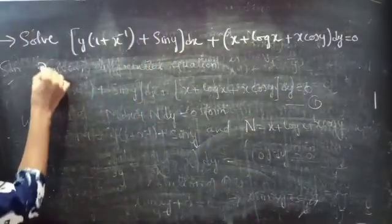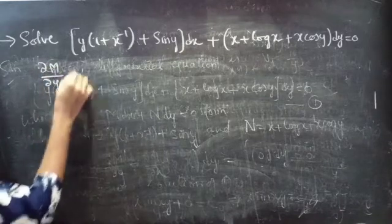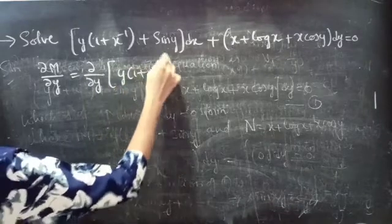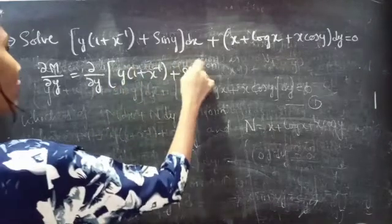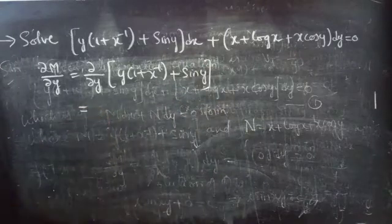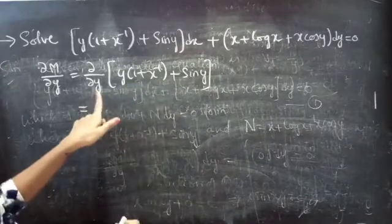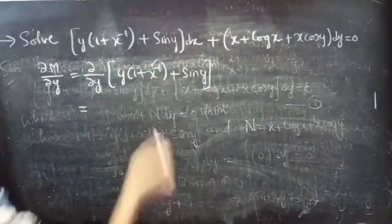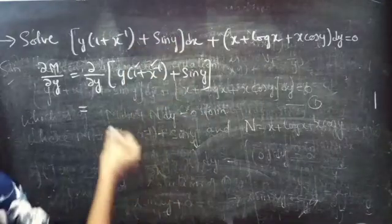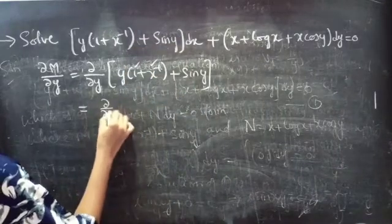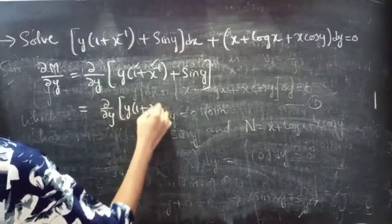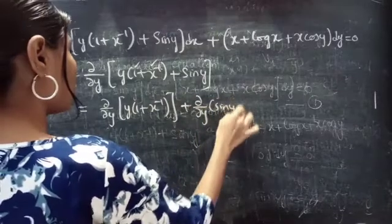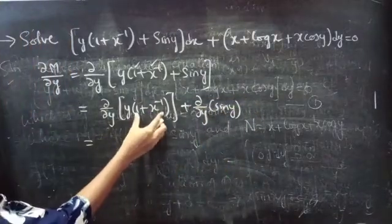Partial derivative of M with respect to y equals to ∂/∂y of y into (1 plus x inverse plus sin y). Here we are doing the partial derivative with respect to y, so we will treat x as constant, and 1 is also constant.